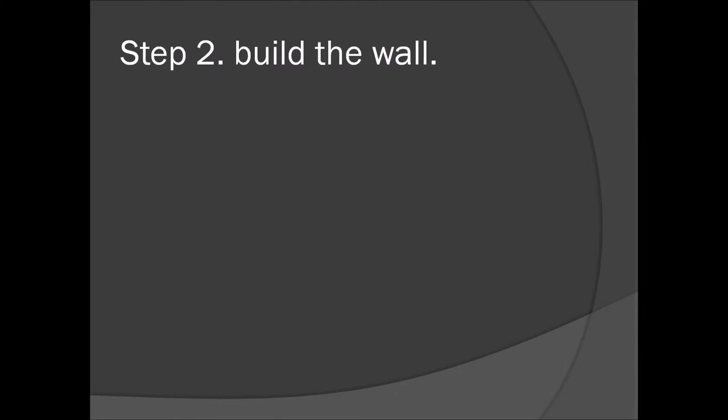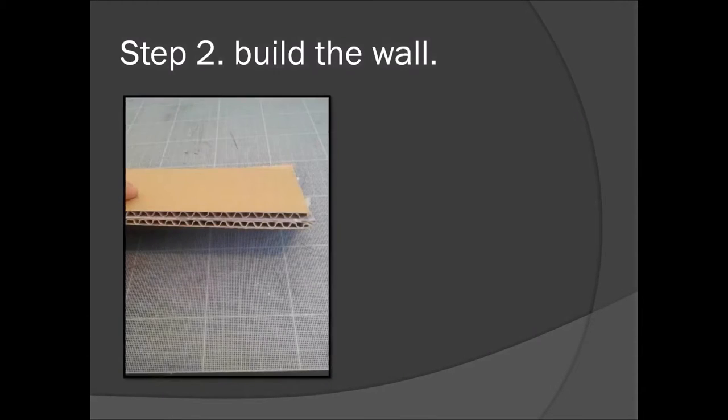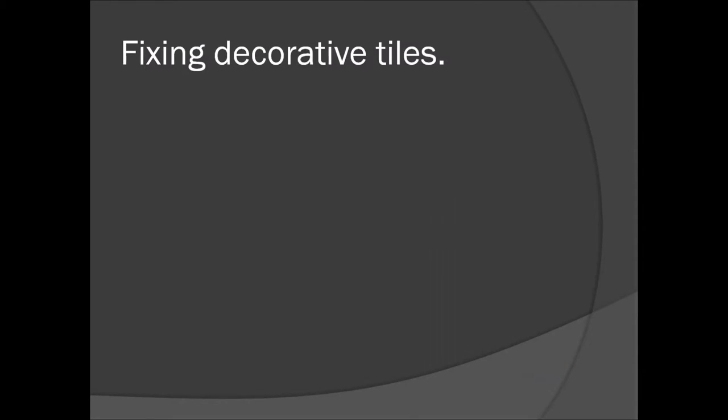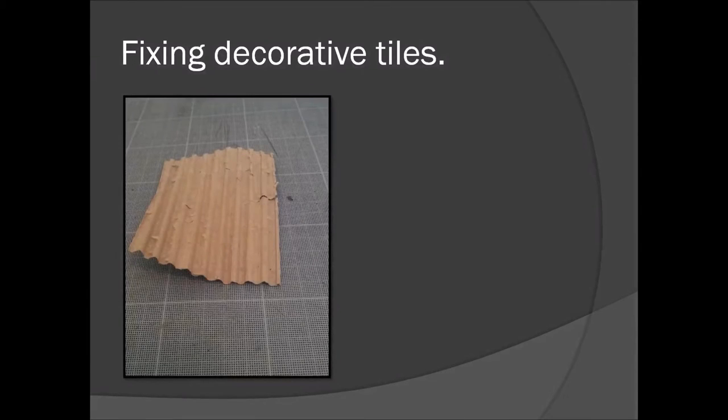Step two: build the wall. So take some cardboard boxes and then scrape away the top and bottom layer. I used the back of a pencil. Take away the top and bottom layer. Now you should have something like this when you're done.